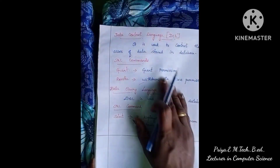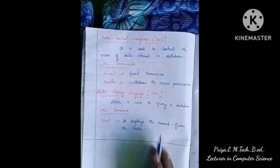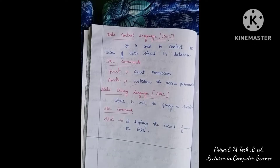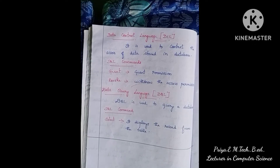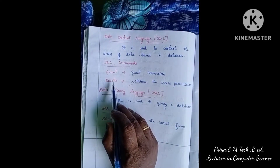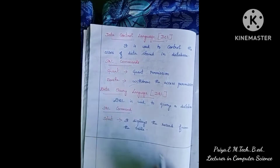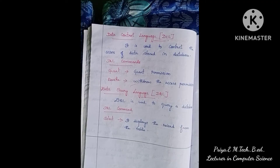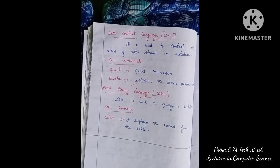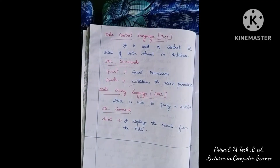The third component is DCL — Data Control Language. It is used to control access to the data stored in your database. Databases store sensitive data, so we control access with two commands: GRANT and REVOKE. The GRANT command is used for giving permission to users to access the data. The REVOKE command is used to remove or take back that permission.